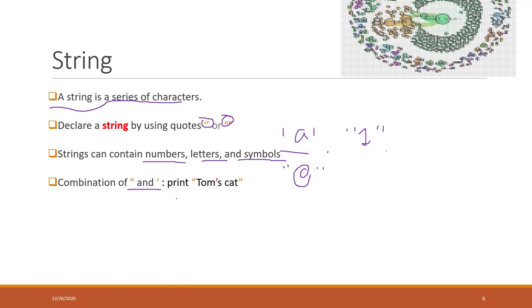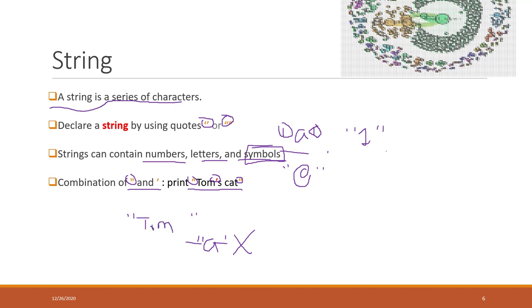When you define a string, if you open with a single quotation mark, the closing mark must also be a single quotation mark — you cannot mix them. However, if you define a string with double quotation marks, a single quotation mark within that string will be considered a symbol. For example, printing "tom's cat" will output: tom's cat.